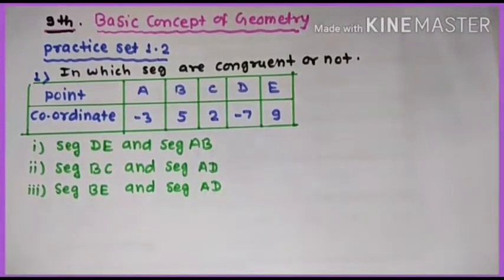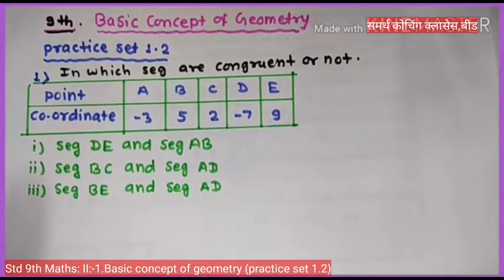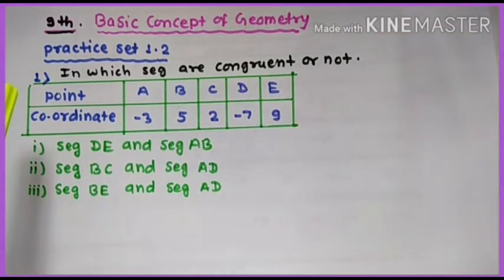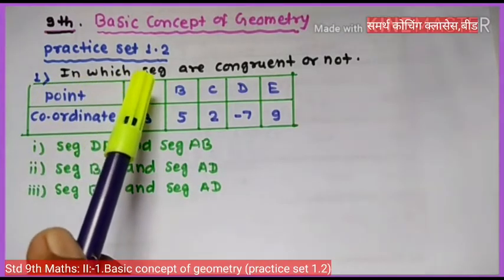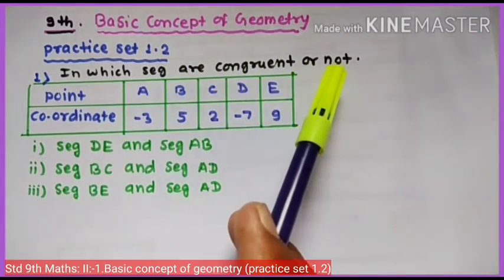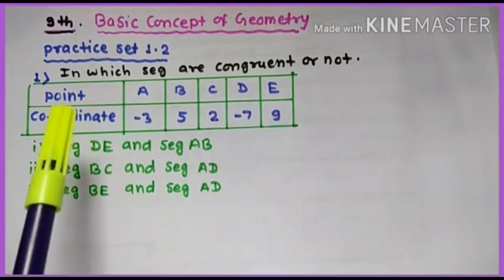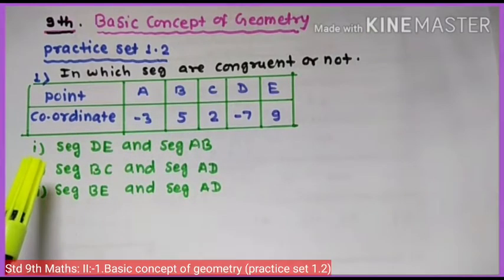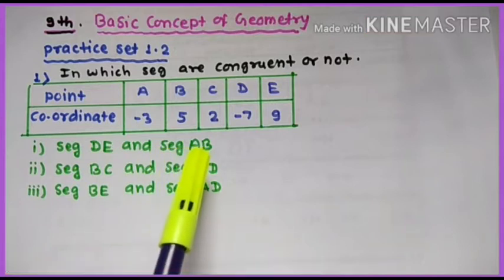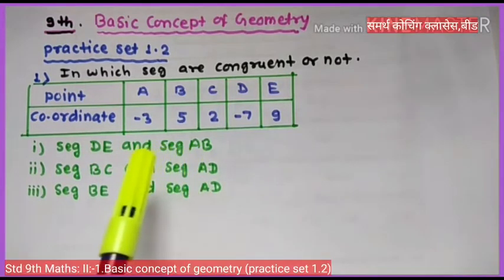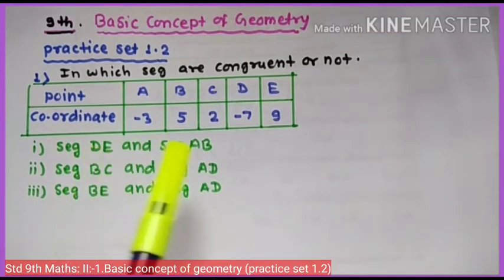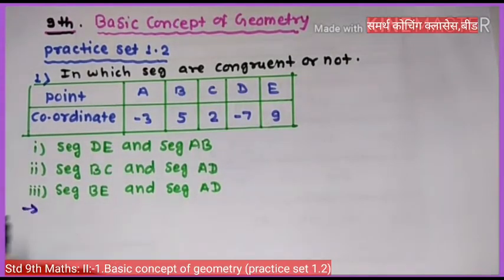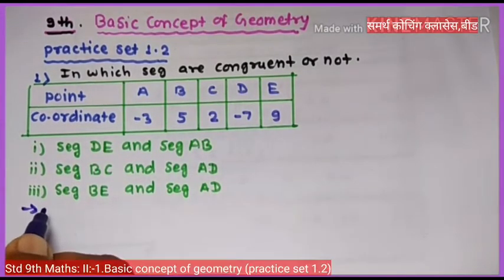Welcome friends. Today we are going to learn basic concepts of geometry, Practice Set 1.2. Question number one: determine whether the given segments are congruent or not. The first question asks whether segment DE and segment AB are congruent or not.